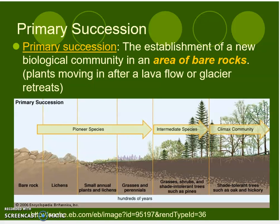Primary succession is the establishment of a new biological community in an area of bare rocks — plants moving in after a lava flow or a glacier retreat. You have your pioneer species that develop first, then intermediate species, and then your climax community is formed.